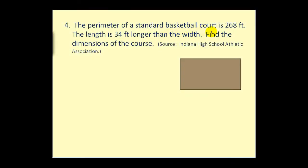The perimeter of a standard basketball court is 268 feet. The length is 34 feet longer than the width. So that's key. We need to express this relationship. So this is 34 feet longer than this. So if we let this equal x, this would have to be x plus 34. And of course the opposite sides are equal.